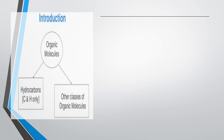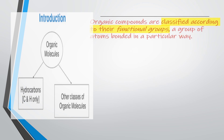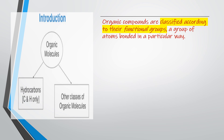Since there are millions of organic compounds, it would be difficult if there were no specific way to classify them. Therefore, organic compounds are classified according to their functional groups, which is a group of atoms bonded in a particular way.